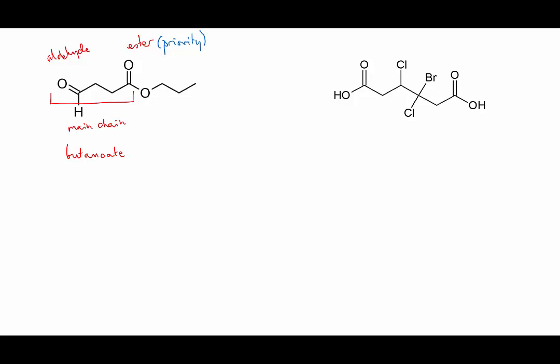It's on the main chain so we're going to number from the carbonyl group backwards, treating the aldehyde as a substituent. When it's a substituent, an aldehyde is called oxo, same as a ketone. So the main chain part of this molecule is going to be called 4-oxo-butanoate.